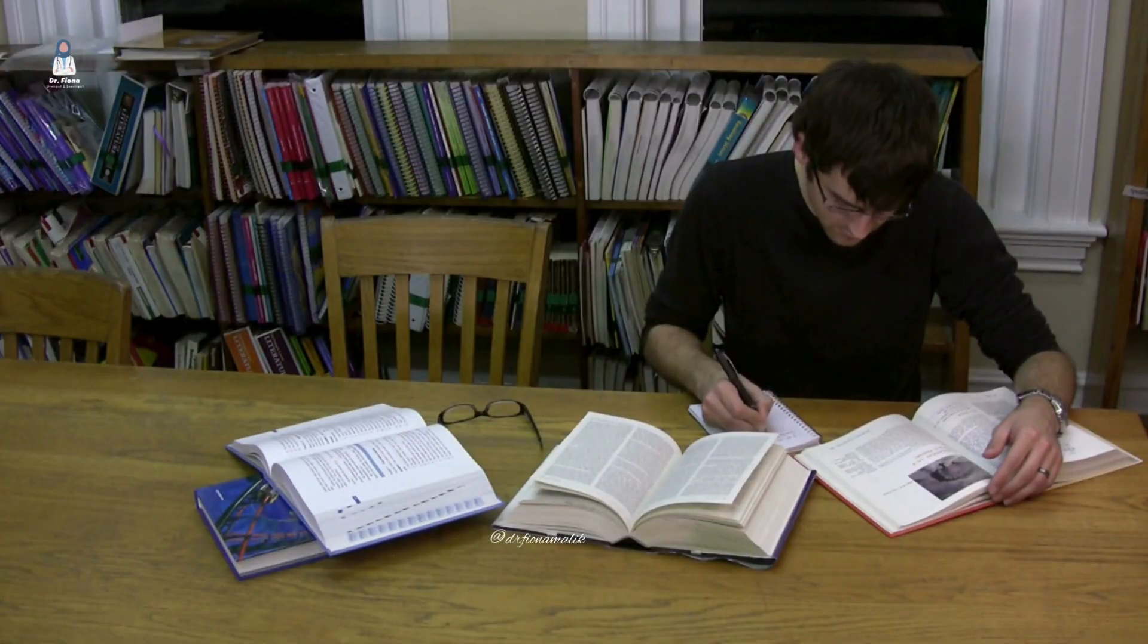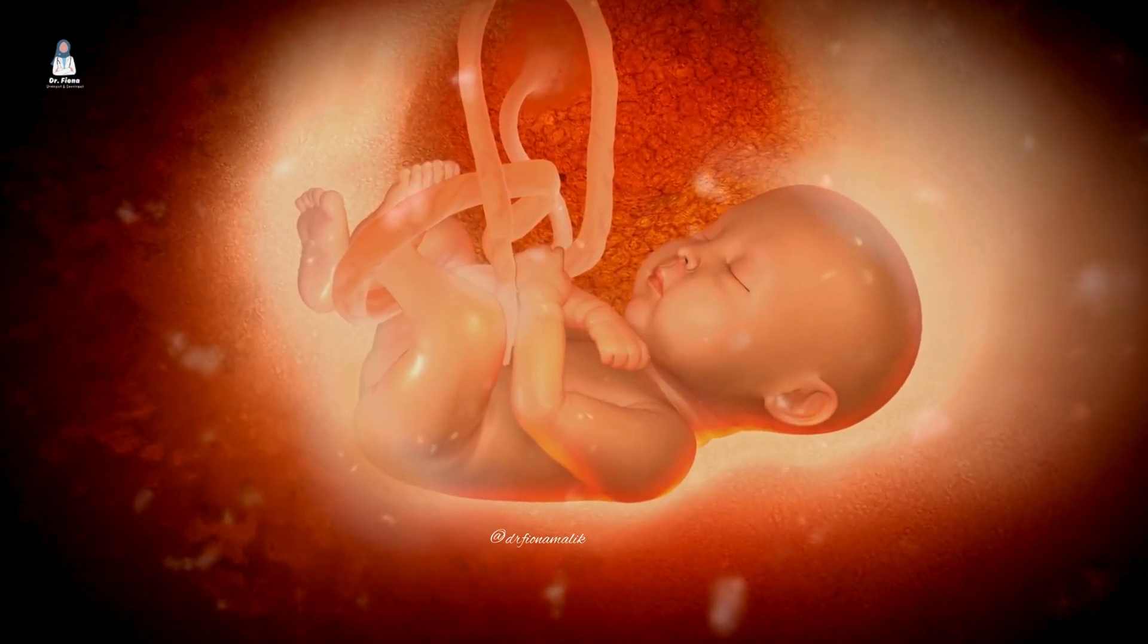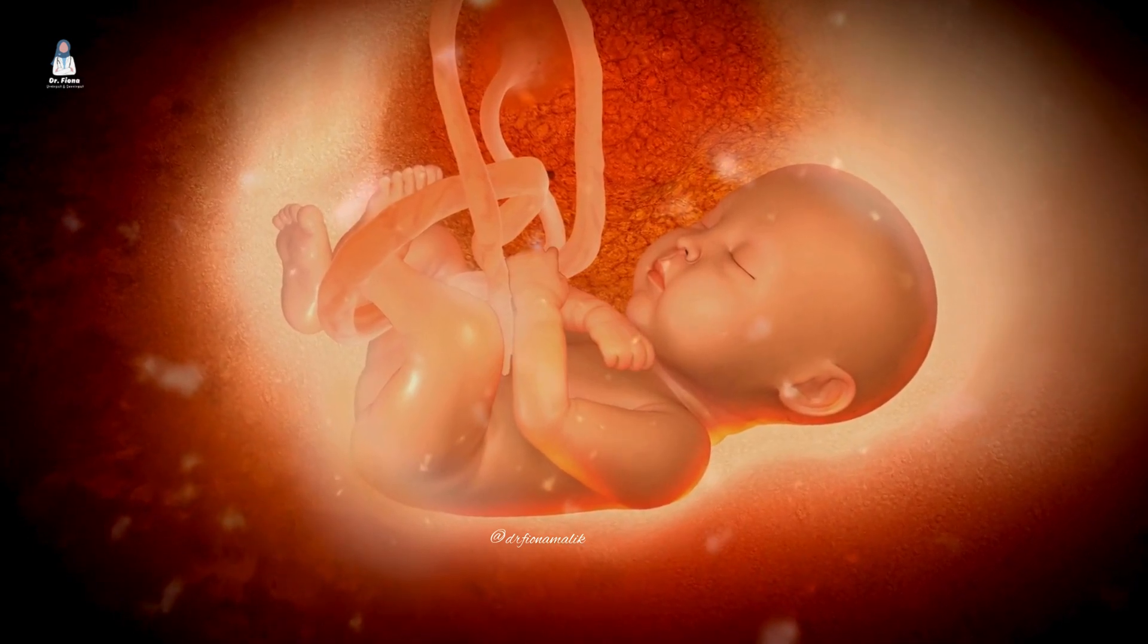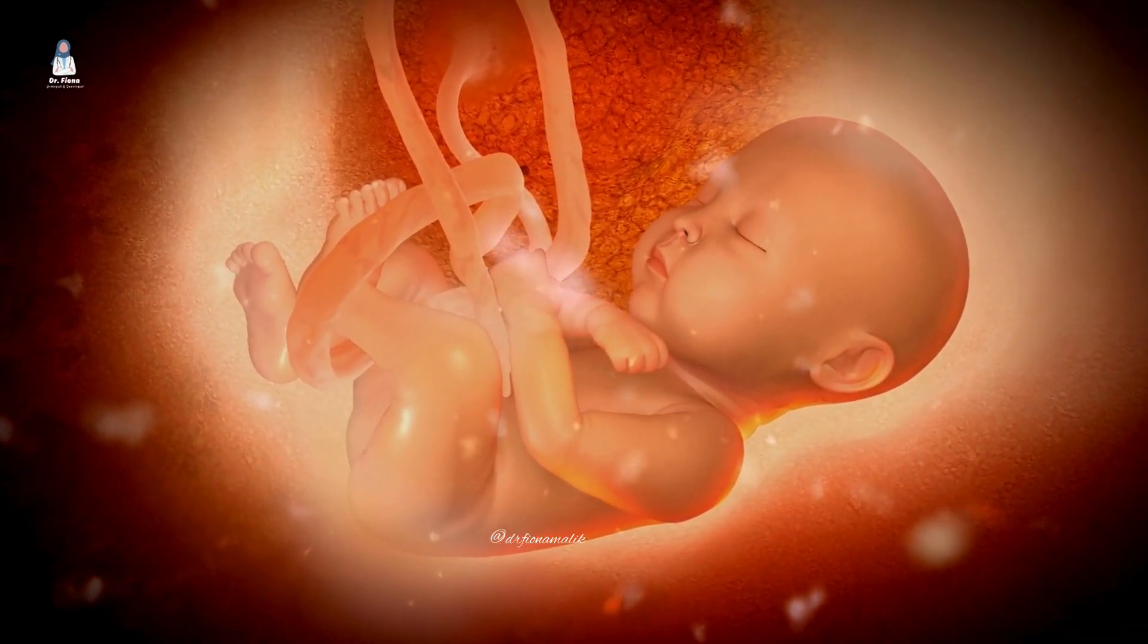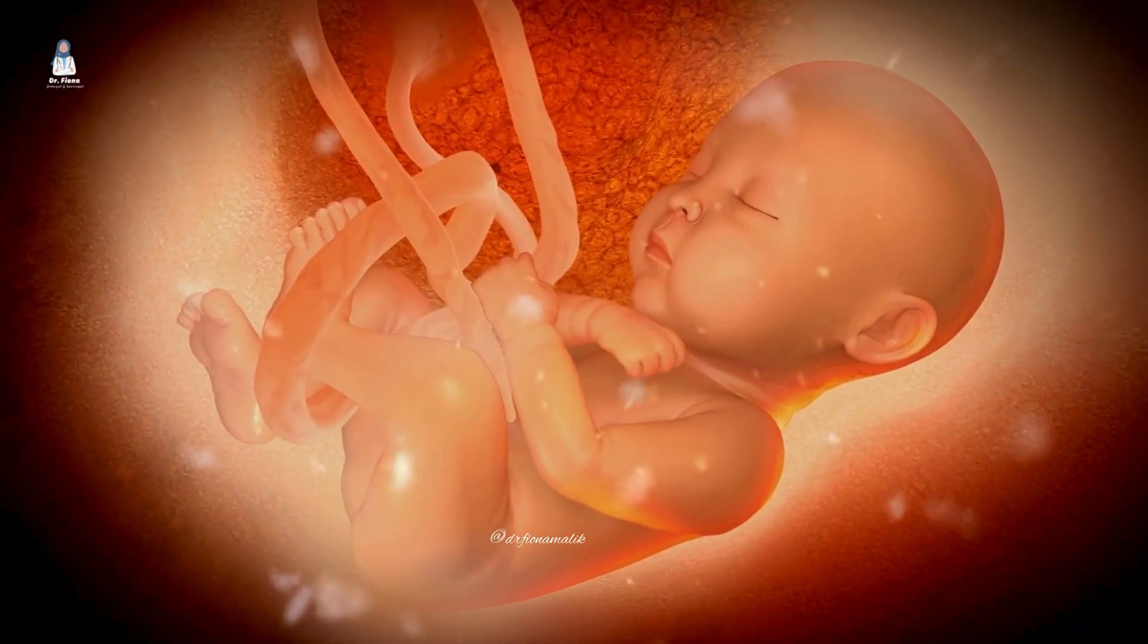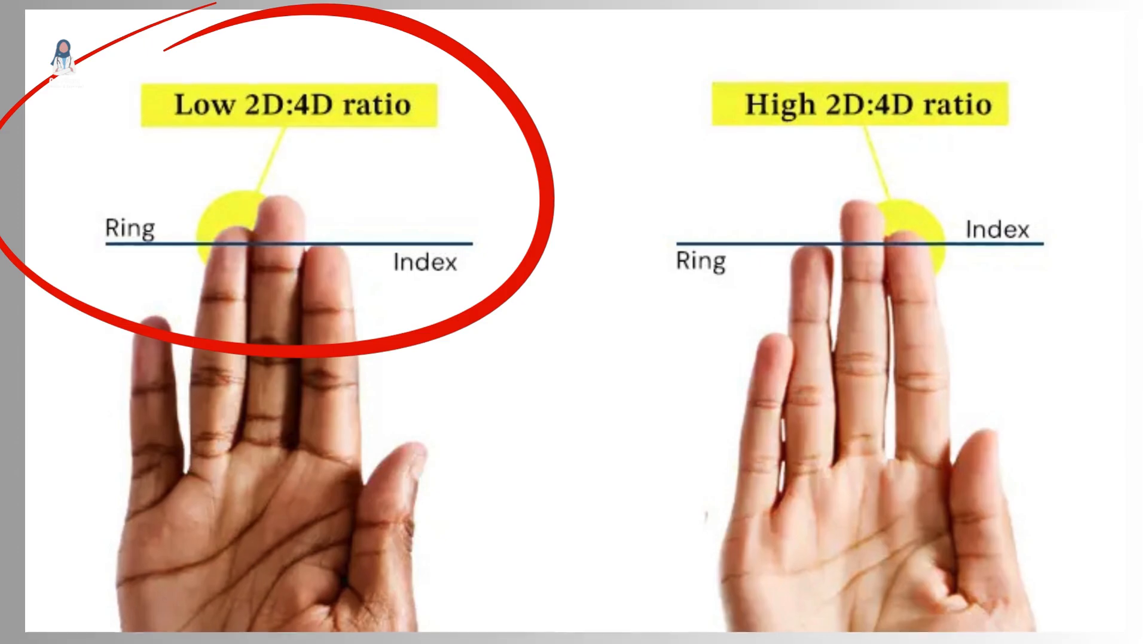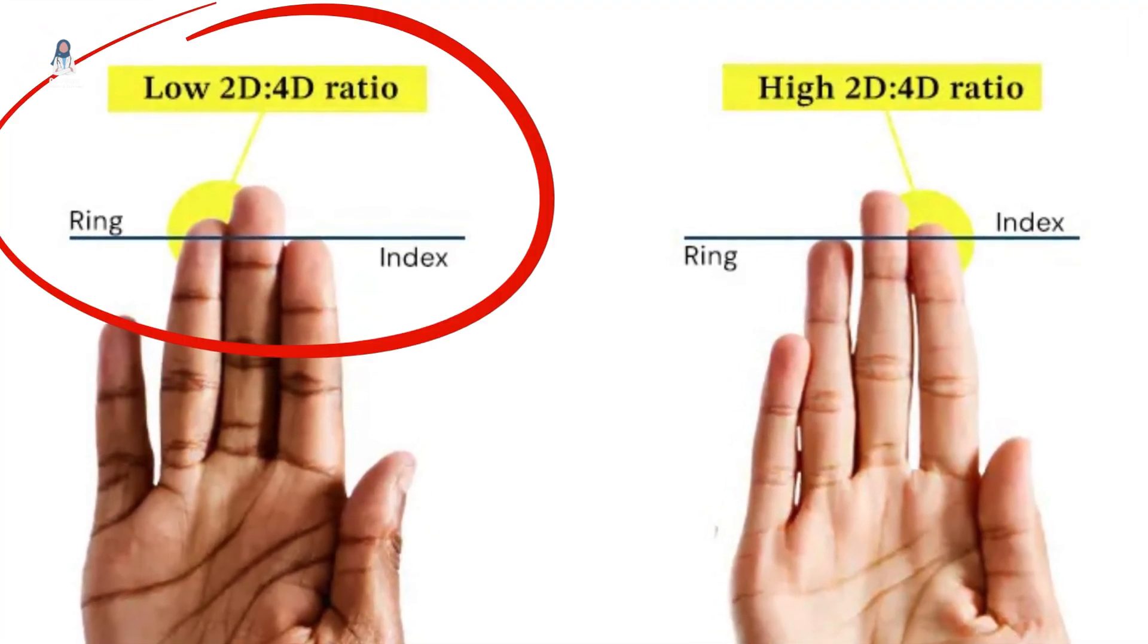Research suggests that the 2D to 4D ratio is influenced by the level of exposure to testosterone in the womb, meaning your exposure to testosterone began long before you were born, specifically between 9 to 14 weeks of gestation. Higher prenatal testosterone levels are thought to result in a lower 2D to 4D ratio, meaning the ring finger is longer compared to the index finger.